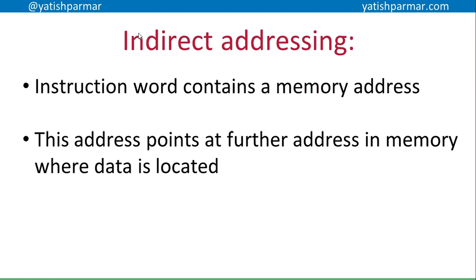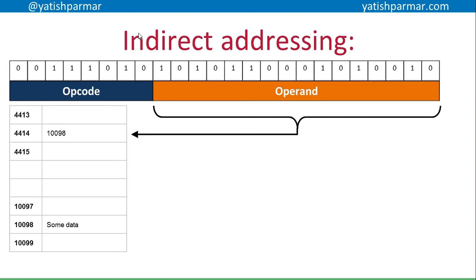Indirect addressing is the technique where the instruction word contains a memory address, but then that memory address points to another address in memory — usually because the actual memory location is larger than the operand. That means you can store a larger address in the memory location that points somewhere further in memory than could possibly be addressed in the operand. So with the same operand as before but using indirect addressing, it's pointing at 4144, which contains 10,098 — a pointer towards the next memory location where the data can then be retrieved and loaded into the memory data register.